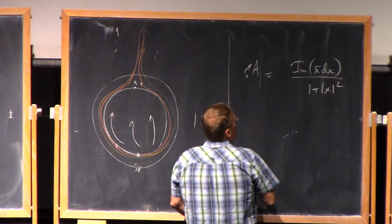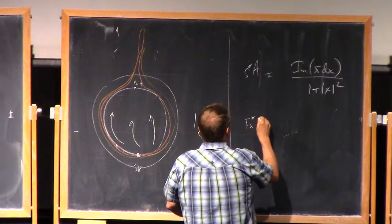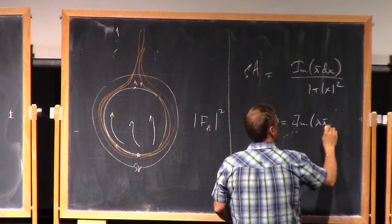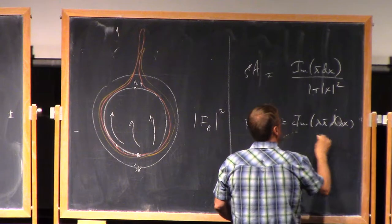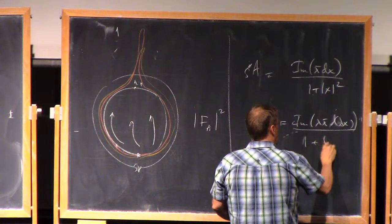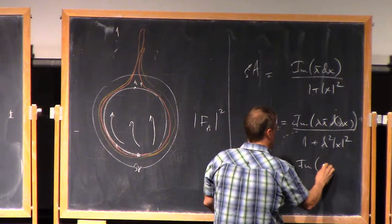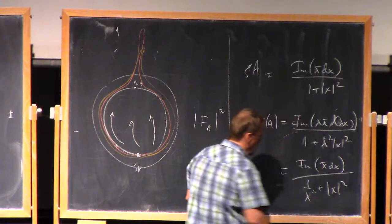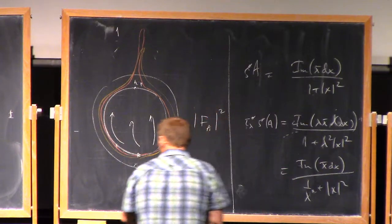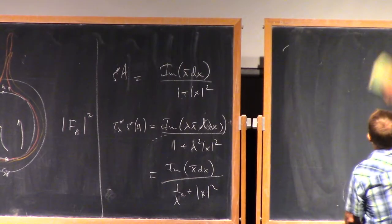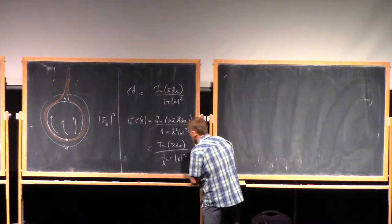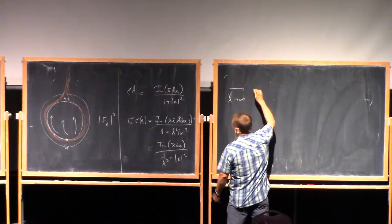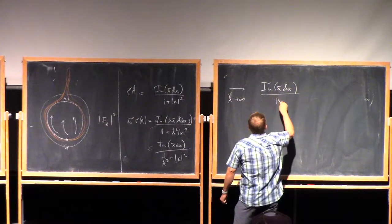If I do this scaling, so if I pull back by scaling, then I scale the coordinates by lambda. So now I rewrite this as this. So as lambda goes to infinity, this, sorry, that's a lambda squared. So as lambda goes to infinity, this becomes the imaginary part. This guy.